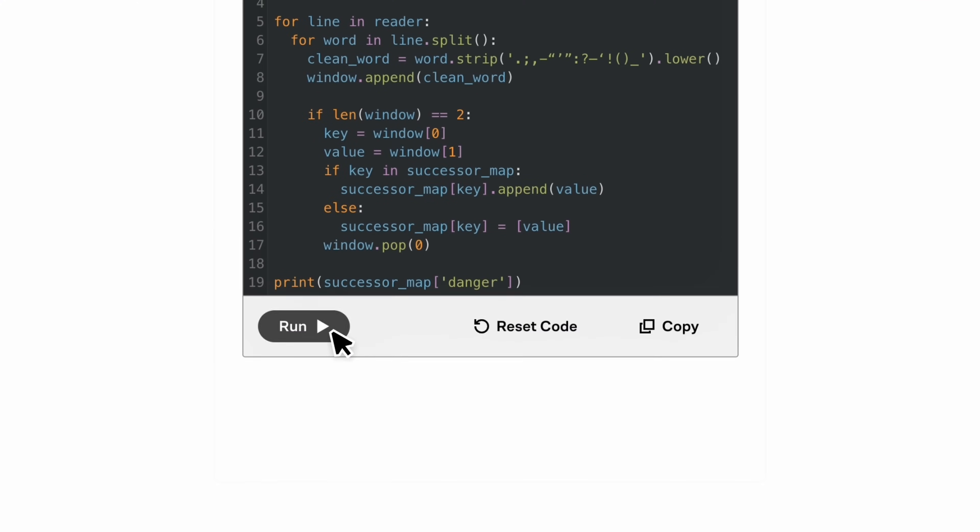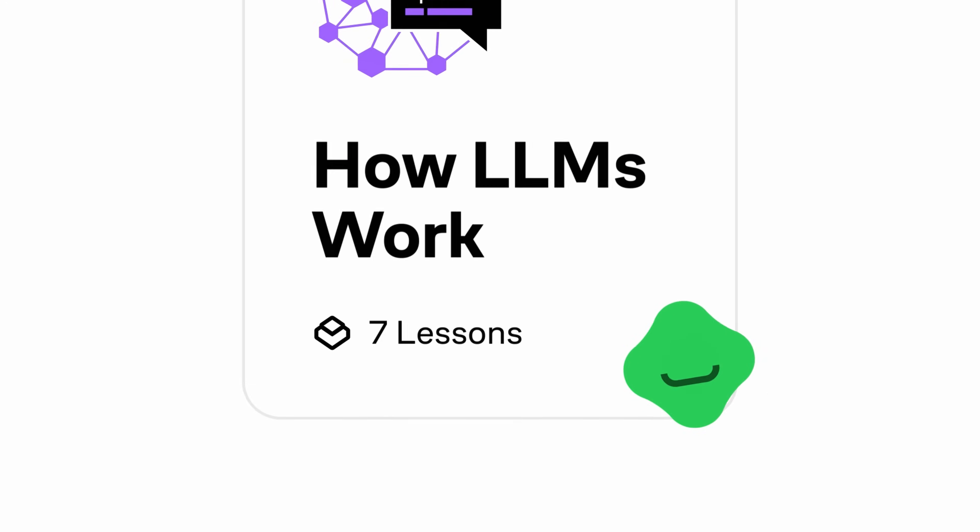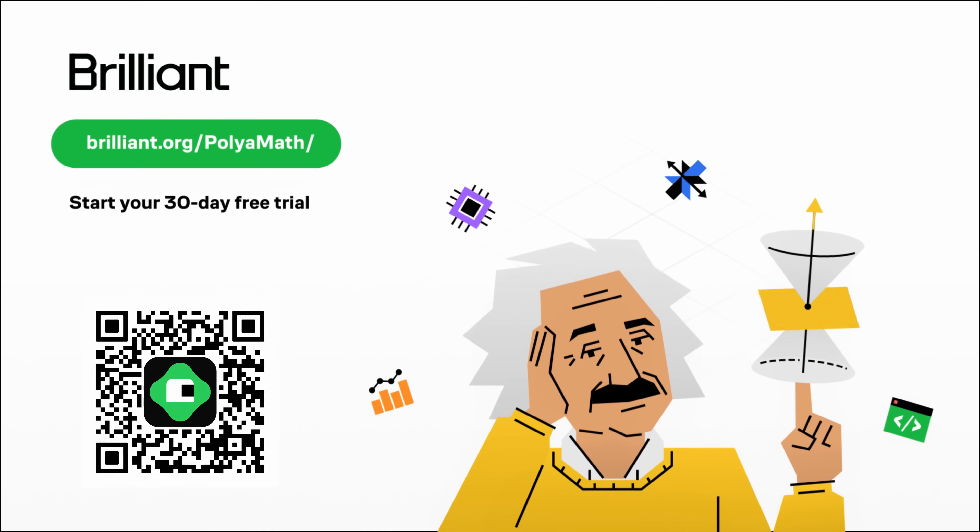Whether you want to get started with programming in Python, or you're interested in how large language models work, you can head to brilliant.org forward slash polymath, or click the link in the description to try everything Brilliant has to offer, free for a full 30 days. You will also get 20% off an annual premium subscription. Thank you.